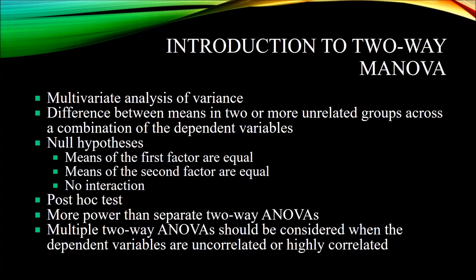The first null hypothesis is that the means of the first factor are equal — in this case, gender. The second null hypothesis is that the means of the second factor are equal — in this case, treatment. The third null hypothesis is that there is no interaction between the factors, meaning no gender-by-treatment effect.